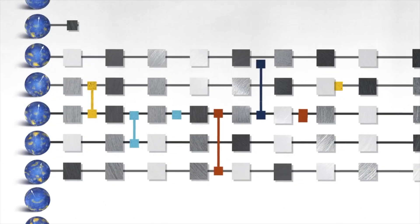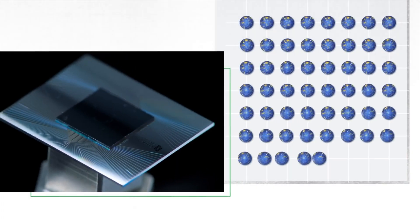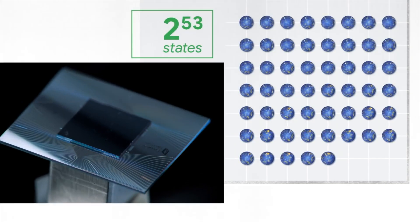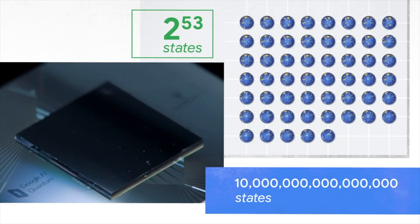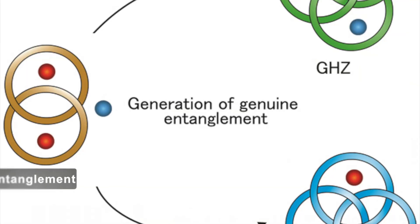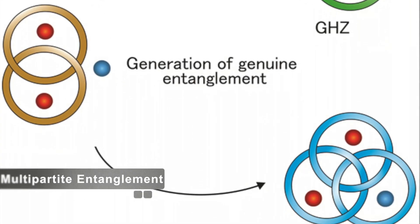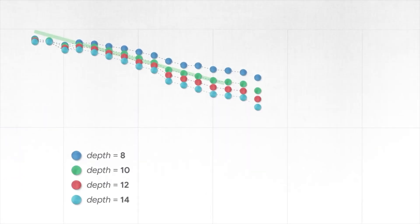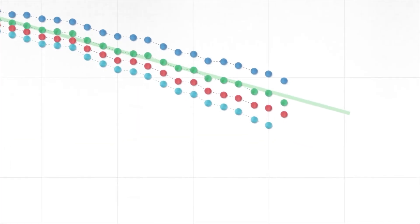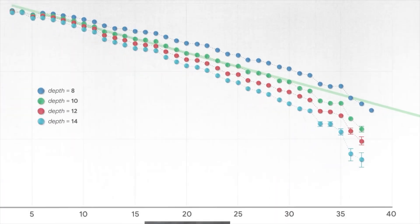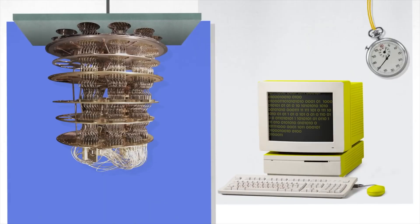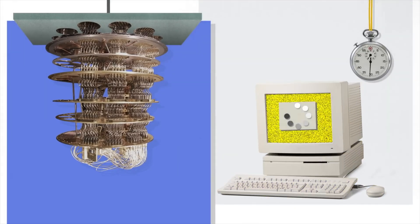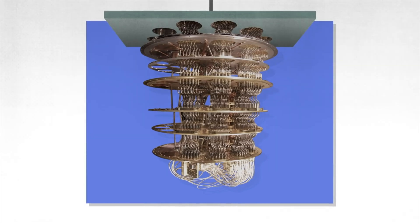There is no theoretical limit to the number of particles that can be entangled — it is only limited by the number of particles we have. When you have more than three entangled particles, it's called multi-partite entanglement. However, entanglement becomes more difficult to measure and control as the number of particles increases. Entanglement is a very promising area of research, with potential applications such as quantum teleportation.